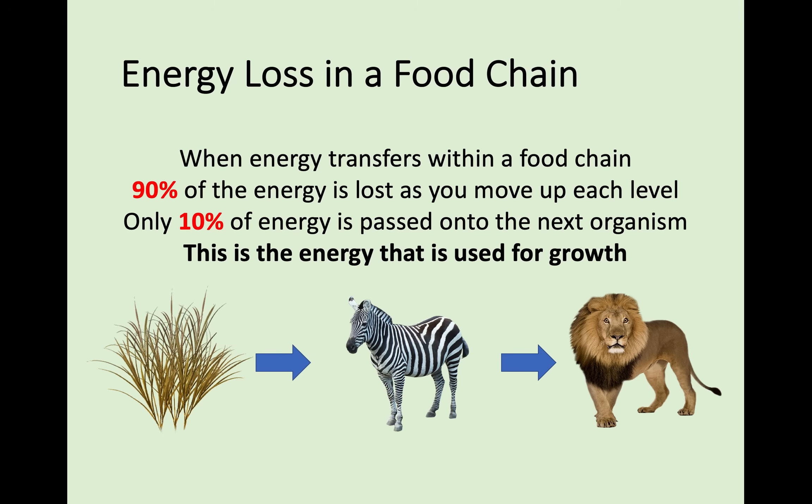If we have a look at this fairly familiar diagram of the grass, the zebra, the lion, and the arrows that show the direction of energy flow, you need to know the percentage of energy that's lost and passed on through the levels of a food chain. 90% of the energy is lost as you move up each level—it's a lot of energy, meaning that only 10% of energy is actually passed on to the organism that consumes the previous organism. This 10% of energy is the energy that is used by an organism for growth. In this example, when the zebra consumes the grass, only 10% of the energy from that plant is passed on to the zebra. And when the lion eats the zebra, only 10% of that energy is actually passed on to the lion.